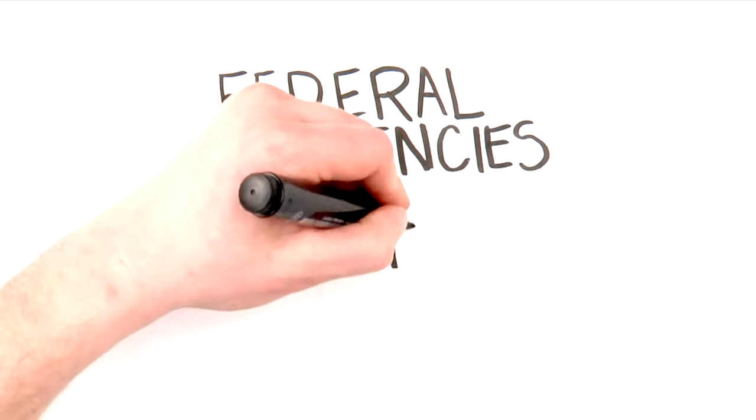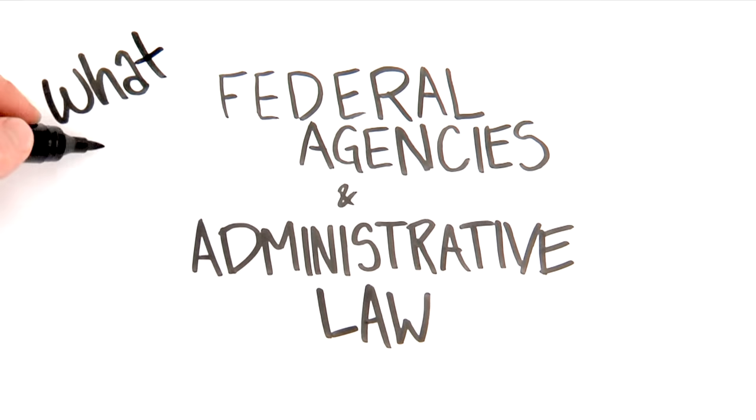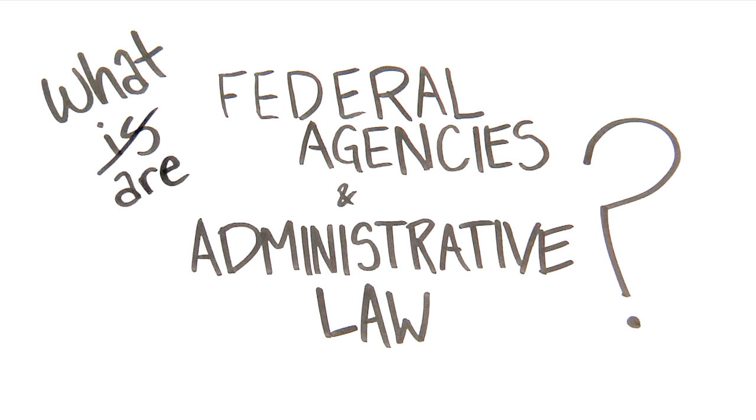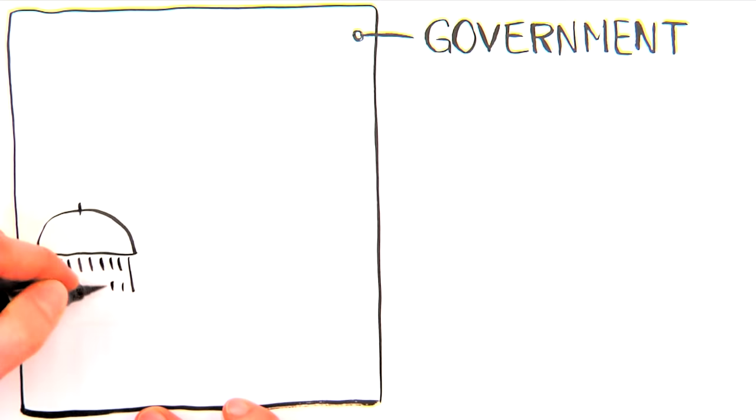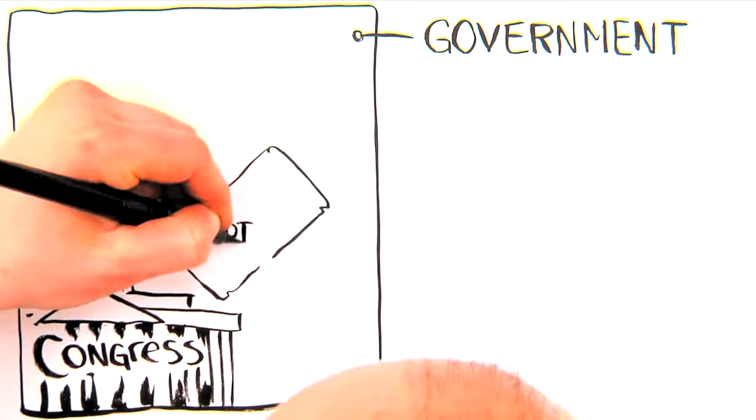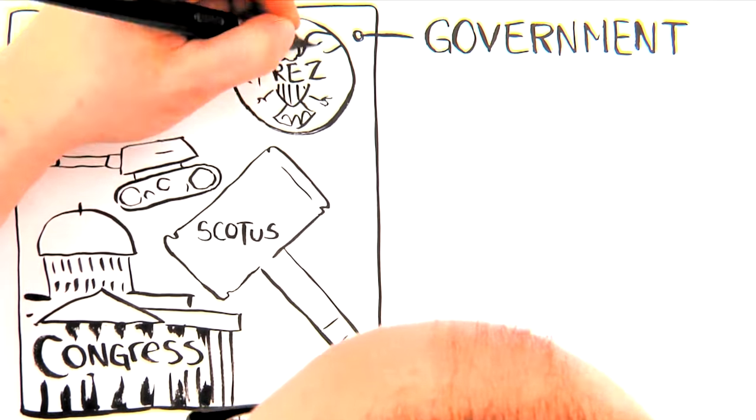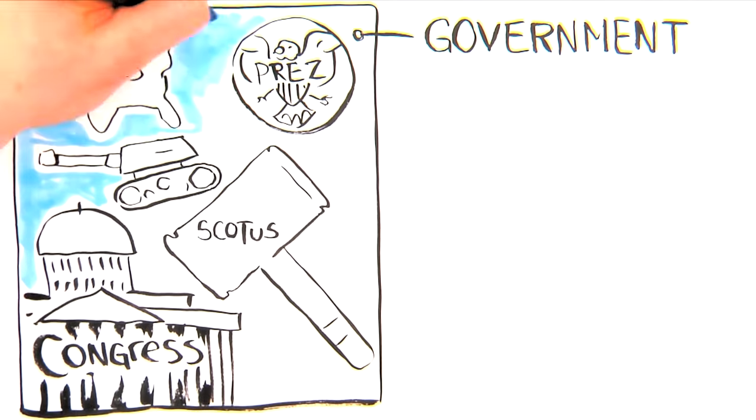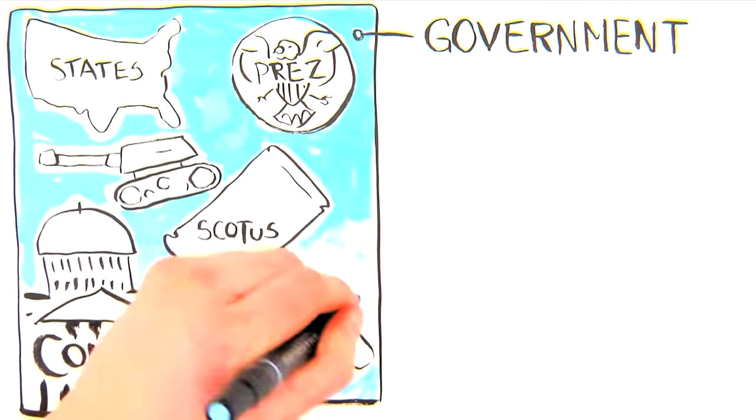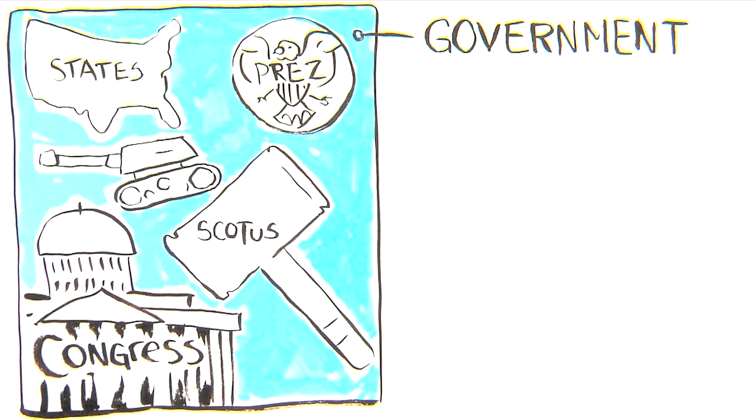The FCC is one of these things called federal agencies, and the laws around them are called administrative law. There isn't a perfect definition for an agency that's consistent for all things called agencies, but roughly, agencies are the parts of the government that aren't Congress, the courts, the President, or the military during wartime.